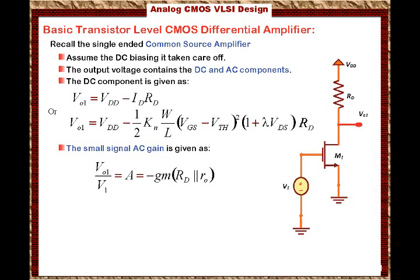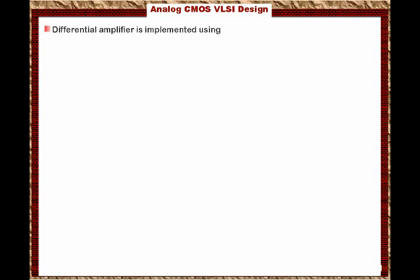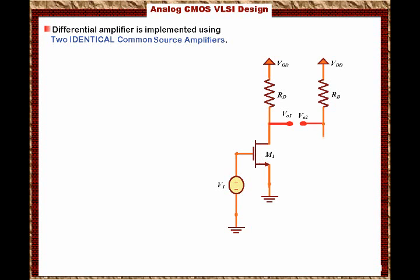This is a review of the single-stage common source amplifier. However, we are interested in the differential amplifier. The differential amplifier is implemented using two identical common source amplifiers, as shown in the figure. One amplifier has transistor M1, the other has transistor M2, and the two inputs V1 and V2 go to each amplifier respectively.